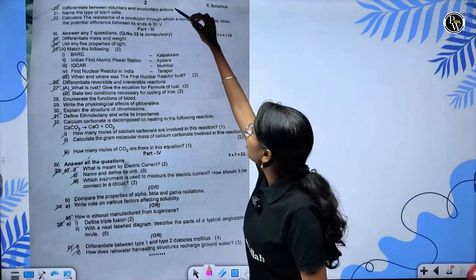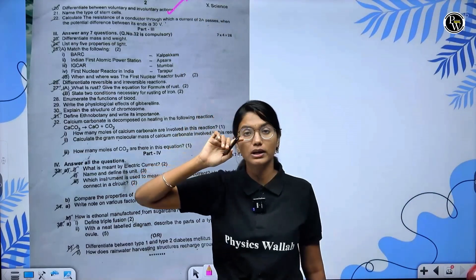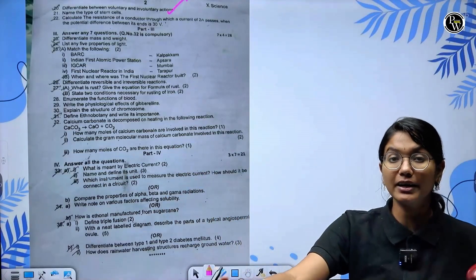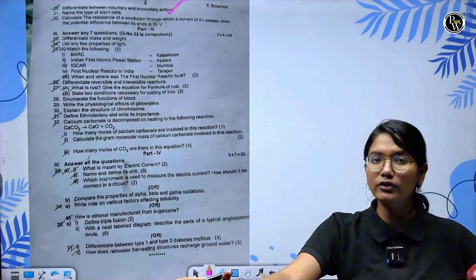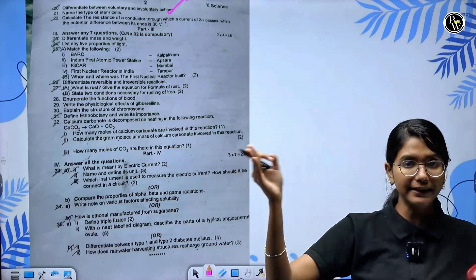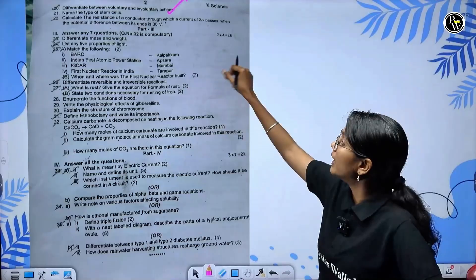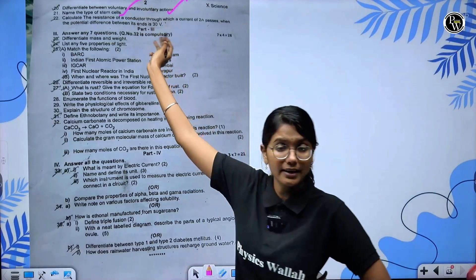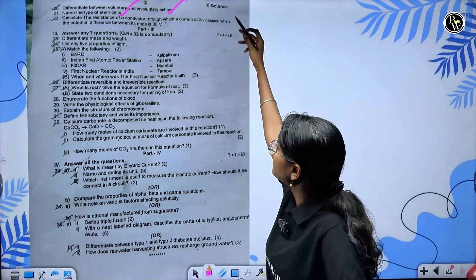Differentiate between voluntary and involuntary actions. Voluntary actions will be under our control, involuntary actions are not under our control. There's one more point of difference. Types of stem cells - this is a very important question.